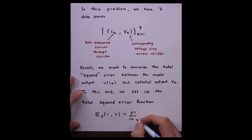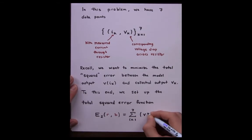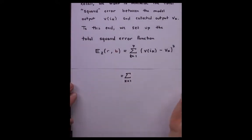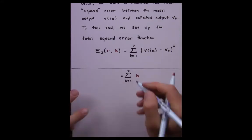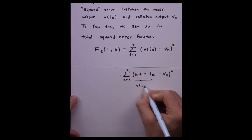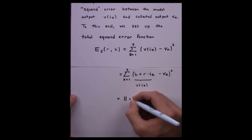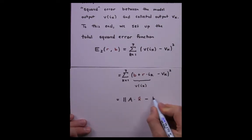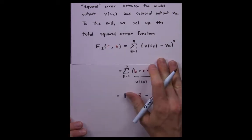given by the sum of the individual errors squared, V(I_k) minus V_k. We can do some manipulation by just evaluating the function V at each input I_k. And this sum we've seen we can translate into the square of the 2-norm of A times X minus B.